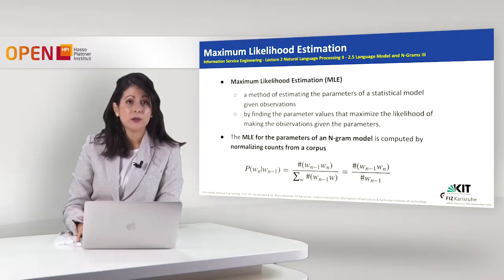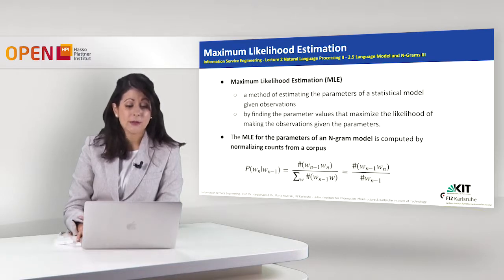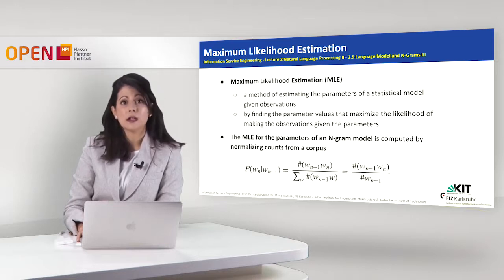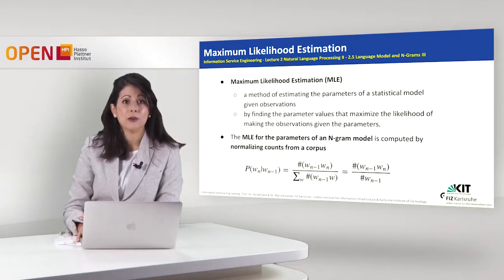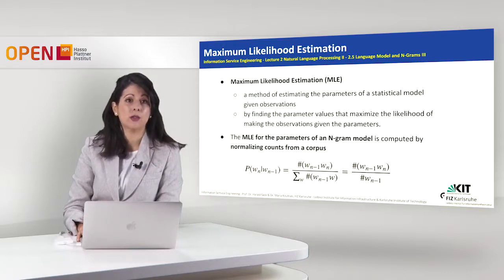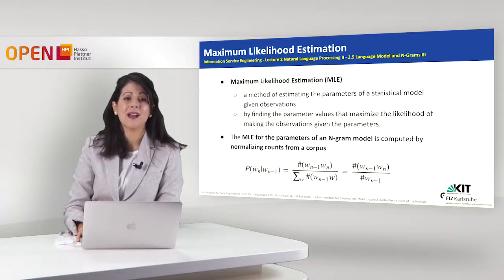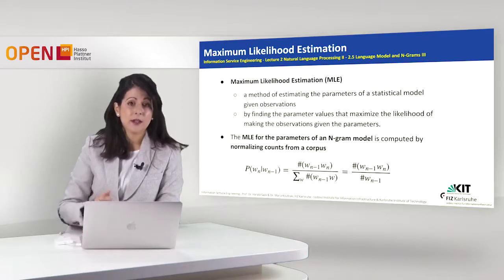In the previous part of the lecture we explained what maximum likelihood estimation is, which is the way to compute the probabilities for n-grams. The definition is that maximum likelihood estimation is a method of estimating the parameters of a statistical model given observations, by finding the parameter values that maximize the likelihood of making the observations for given parameters. The MLE for n-gram models is computed by normalizing counts from a corpus, and this is the equation that tells us how to compute these parameters.